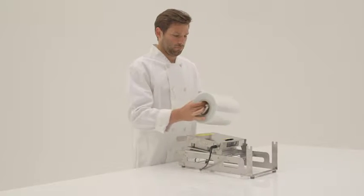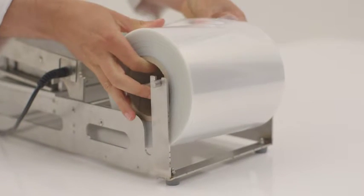To get started with the 539S, insert the film holder in the reel and place on the rear of the machine.